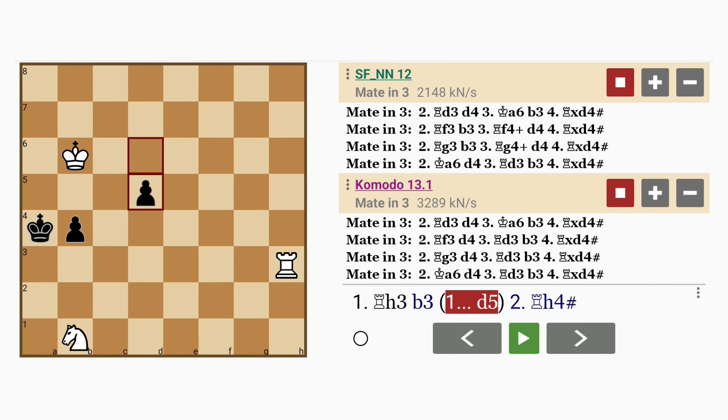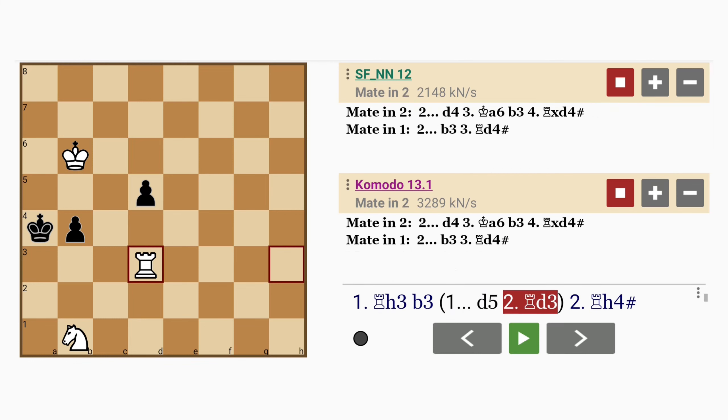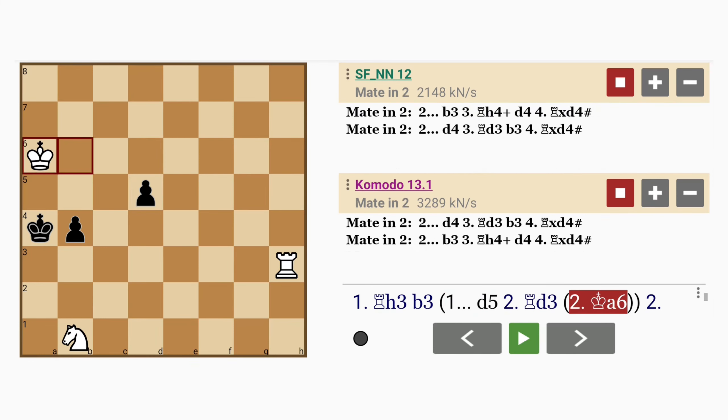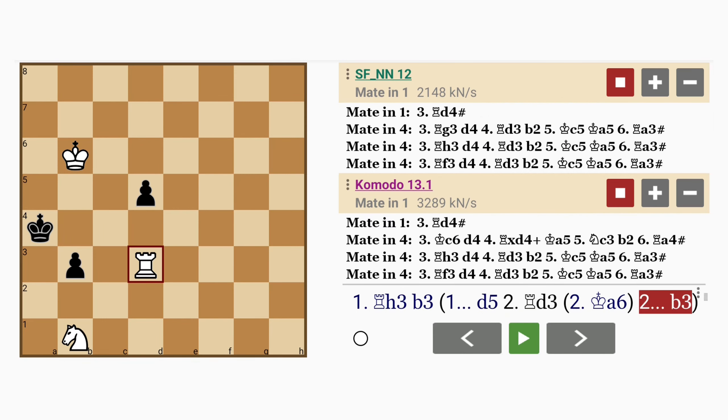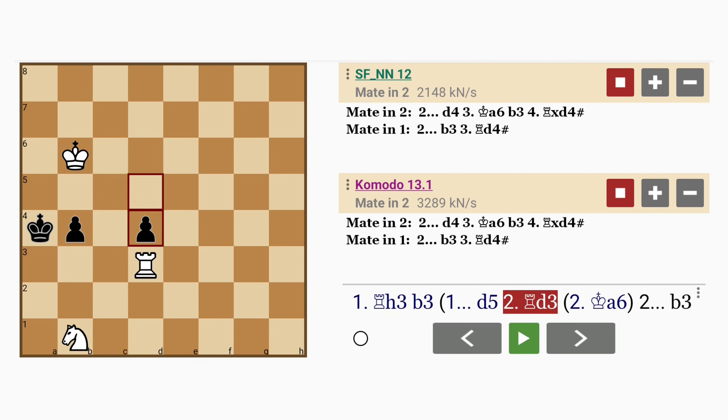Only d5. Now here, white has a few options. The rook can move along the safe squares on the third rank, or even play king to a6. But let's take a look at one of the rook moves. Now again, if b3, rook to d4 mates, so d4.